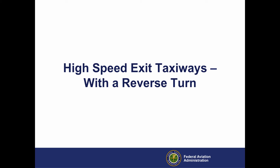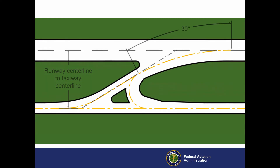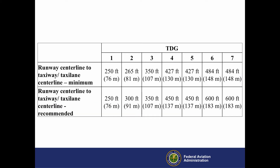High-speed exit taxiways with a reverse turn. To design a reverse turn to the parallel taxiway, you may need to increase the runway centerline to parallel taxiway centerline separation to accommodate the 30-degree exit turn and the following 150-degree turn that is necessary to achieve a nose gear steering angle of no more than 50 degrees for the taxiway design group or TDG. For each TDG, the AC lists the minimum and recommended runway centerline to taxiway centerline distance for standard high-speed exit taxiways that require a reverse turn. Runway centerline to taxiway centerline separation distances must never be less than airspace requirements. Also check for separation distances based on airspace requirements for visibility minimums, the aircraft approach category, and the ADG.